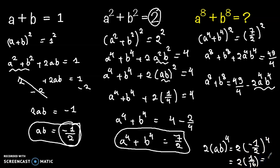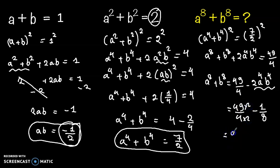Multiply this fraction by 2, so we will get 98 over 8 minus 1 over 8, which equals 97 over 8.